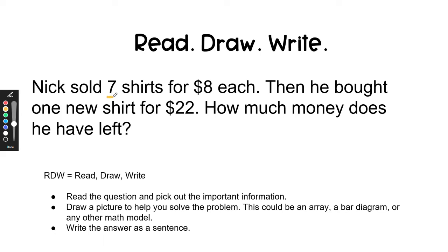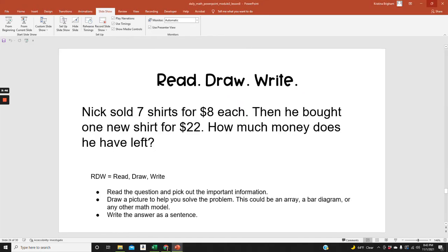Okay, let's read the question. Nick sold 7 shirts for $8 each. Then he bought 1 new shirt for $22. How much money does he have left? Okay, we've read the question. Now it's time to draw a math model.